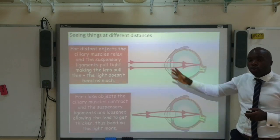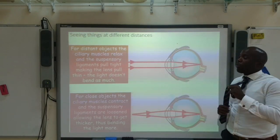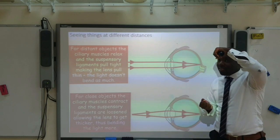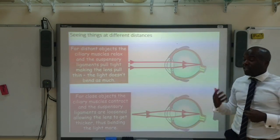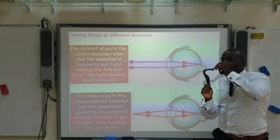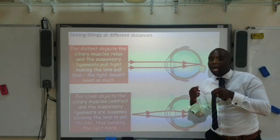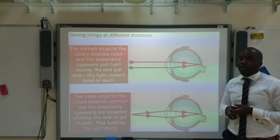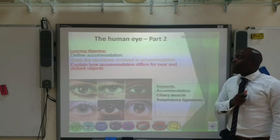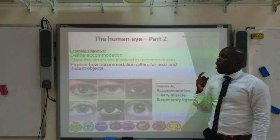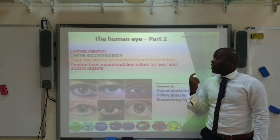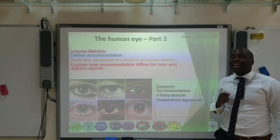Quick recap: if the object is distant, the ciliary muscle relaxes, the suspensory ligaments pull tight and make the lens thin, because the light doesn't have to be refracted as much. If the object is close by, the ciliary muscles contract, the suspensory ligaments loosen, and the lens becomes thicker — the more refraction that takes place. Here's a little table you can note down to summarize this information. Hopefully you're now able to define accommodation, state the structures involved, and explain how accommodation differs for near and distant objects. Don't forget to like, share, subscribe and revise.